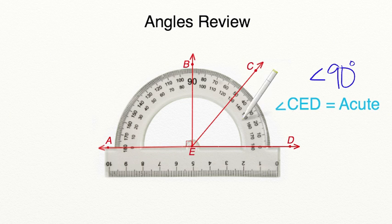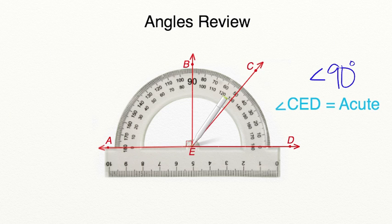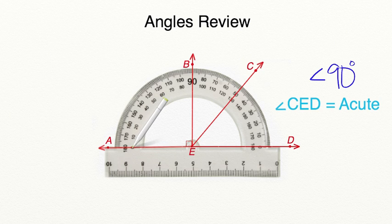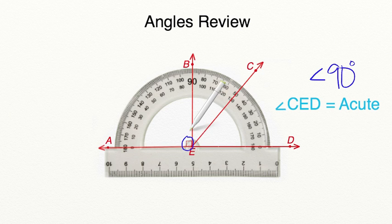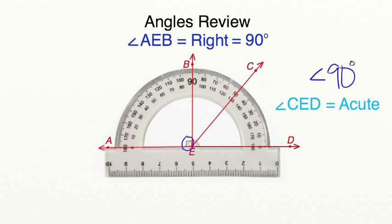Let's move on and find the measure of angle A-E-B. Now notice, this angle is facing to the left. So we have our vertex lined up and we have our left hand ray also lined up with a zero degree mark. But notice, the zero degree mark on the protractor to the left starts on the inside of the angle. So we're going to follow the inside of the protractor all the way up until we stop at our second ray at exactly 90 degrees. Now you're also going to notice that there is a square in the corner of this angle. When you see a square in the corner of an angle, that represents that it has a value of exactly 90 degrees. We call these a right angle.